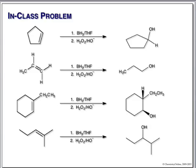Things to remember here: we are making an anti-Markovnikov alcohol, and the hydrogen and the hydroxyl group are cis.